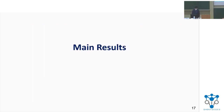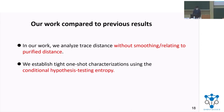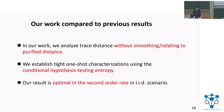Now we get into our main results. We first compare our work to the previous results. In our work, we analyze the trace distance without smoothing and without relating to the purified distance. This allows us to establish the tight one-shot characterization using the conditional hypothesis testing entropy. Moreover, our result is optimal in the second-order rate in the i.i.d. scenario, which is the main progress compared to the previous results.